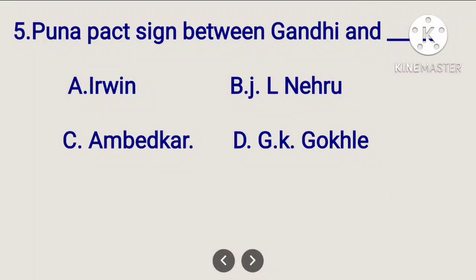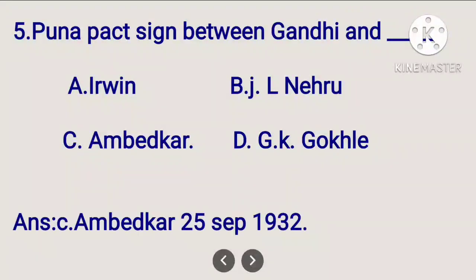Poona Pact was signed between Gandhi and whom? The correct answer is option C: Ambedkar. The Poona Pact was signed between Gandhi and Ambedkar in 1932, on 25th September 1932.